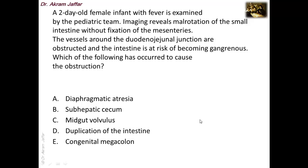A two-day-old female infant with fever has imaging revealing mild rotation of the small intestine without fixation of the mesenteries. The vessels around the duodenojejunal junction are obstructed and the intestine is at risk of becoming gangrenous. This is a case of midgut volvulus, which is commonly associated with malrotation. Twisting of the intestinal loop around its mesentery causes intestinal obstruction and simultaneously obstructs blood vessels, resulting in gangrene.